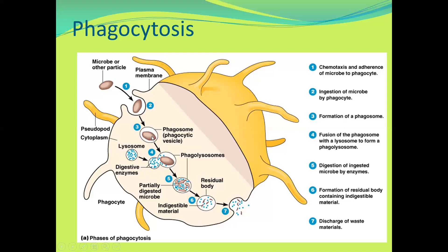That vesicle then moves on. There are different types of vesicles present in a phagocyte — there are lysosomes present in the phagocyte, and these lysosomes contain digestive enzymes. The phagosome and the lysosome fuse together to form a phagolysosome. The lysosome releases all the digestive enzymes, and those enzymes then destroy and digest the pathogen.